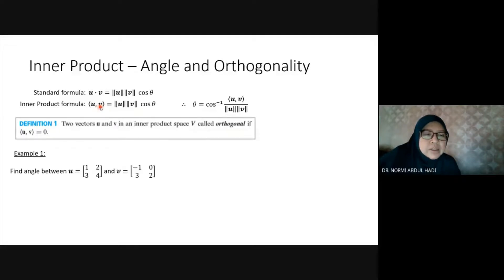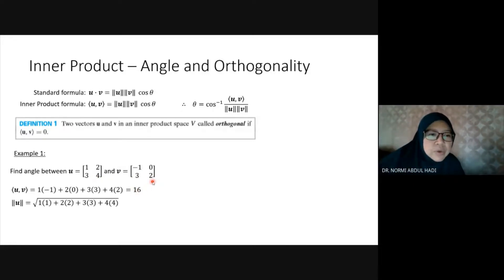Example 1: Find the angle between u and v. The inner product of uv: 2×0 + 3×3 + 4×2, inner product is 17. Magnitude of u is √(u·u).